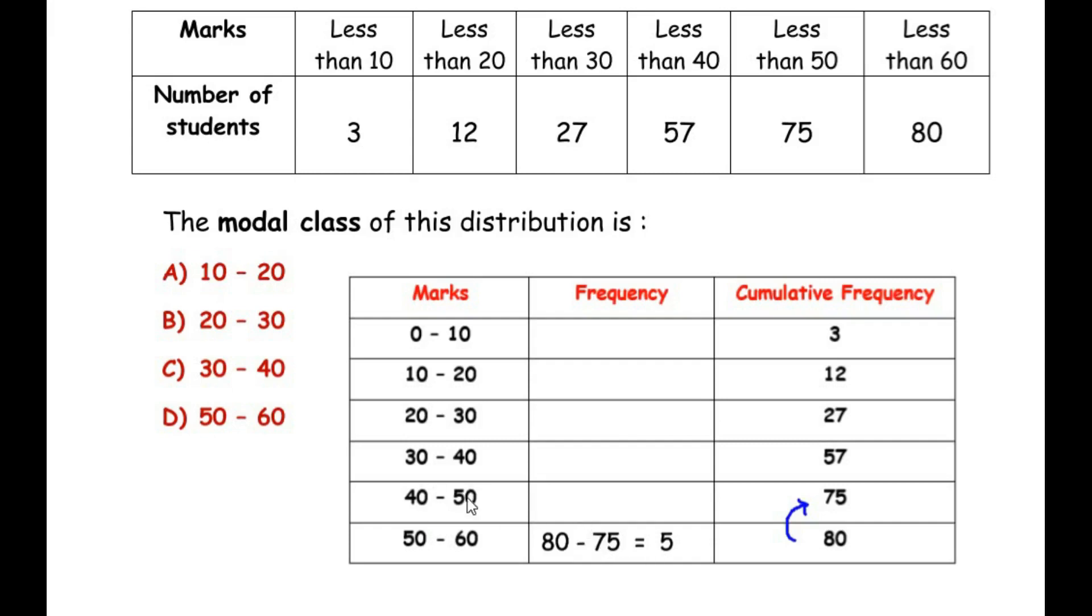Similarly to find out the number of students those who have scored between 40 and 50 we do 75 minus 57. So we get 12. So let us find out the remaining frequencies. So here again 57 minus 27 will give us 30, 27 minus 12 will give us 15, 12 minus 3 will give us 9 and the first number remains the same.